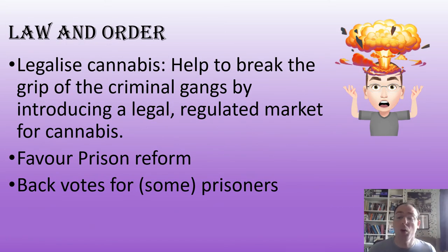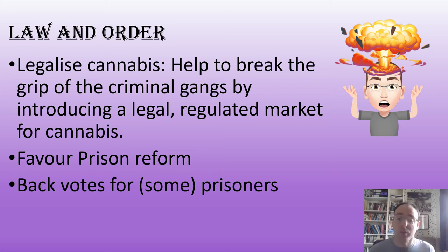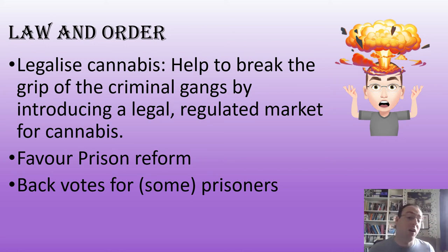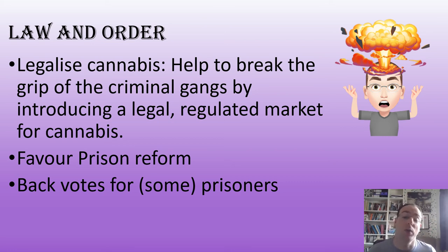In law and order, the big and somewhat mind-blowing policy for the Liberal Democrats is the legalisation of cannabis. They say this would help break the grip of criminal gangs and they would introduce a regulated market for it. They are traditionally also very much in favour of prison reform and have backed the idea of votes for prisoners — not all prisoners, but for a significant number of them.